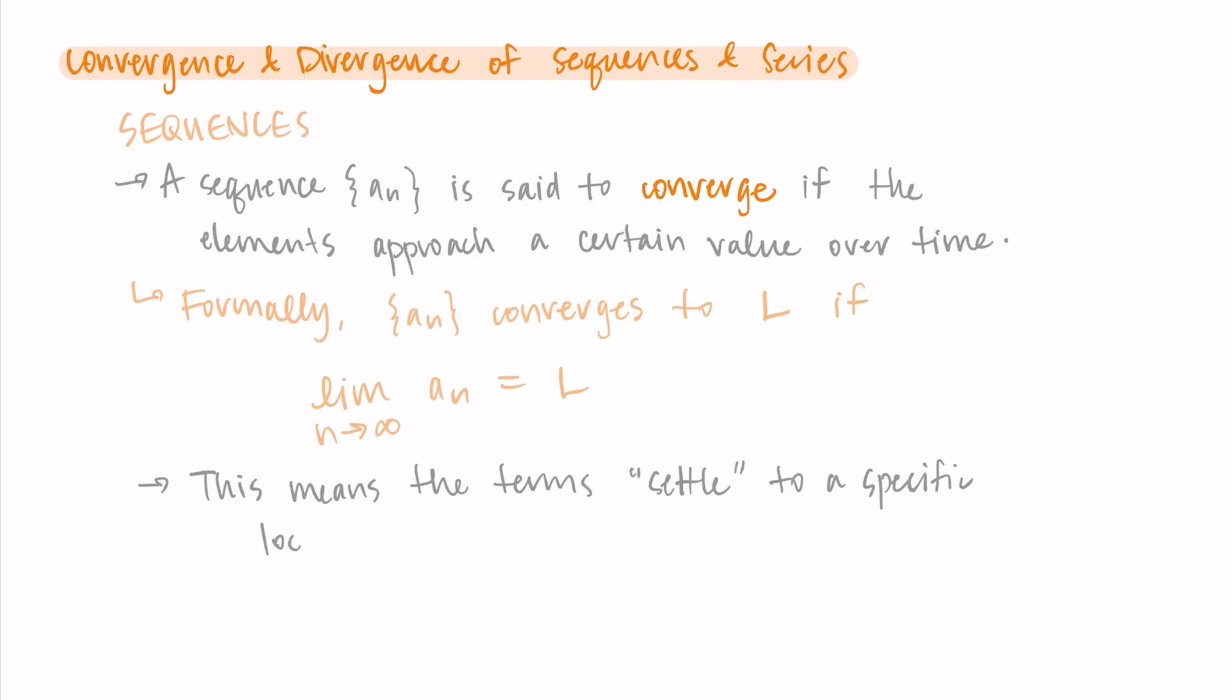I like to think of them as settling on a specific location or really just approaching, reaching a set value. So as we look down the list as n approaches infinity, as we go further and further away, the terms of the sequence are approaching some value L.